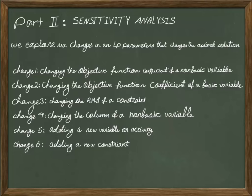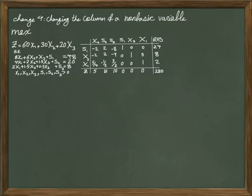In this series of videos related to sensitivity analysis we are in part 2 where we explore different changes in the linear programming problem parameters that might change the optimal solution. In this lesson we investigate change 4 which is changing the column of a non-basic variable. Suppose we are given a linear programming problem and its optimal table as shown on the screen.